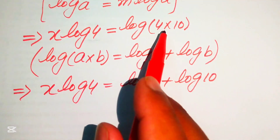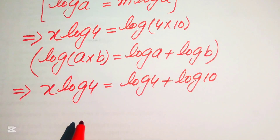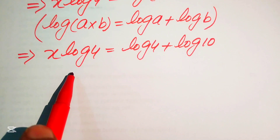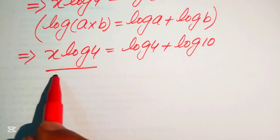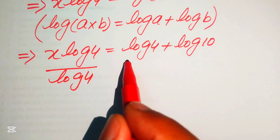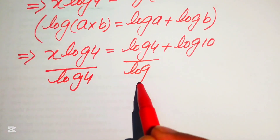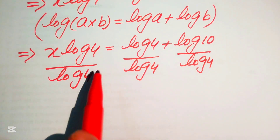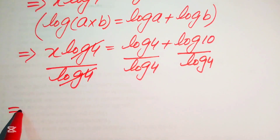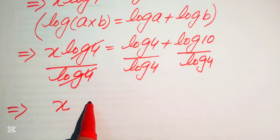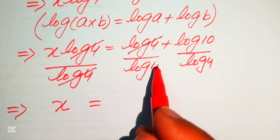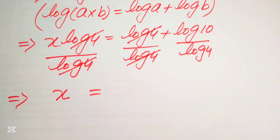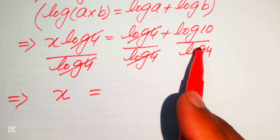We apply log separately on both terms, and then to separate the value of x, we divide both sides by log 4. So log 4 cancels on the left hand side, giving x equals log 4 plus log 10, all over log 4. Further simplifications are needed on this term.